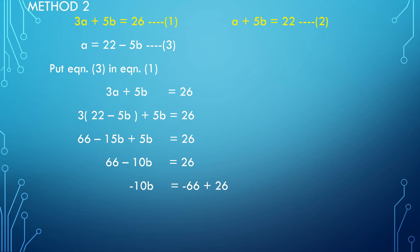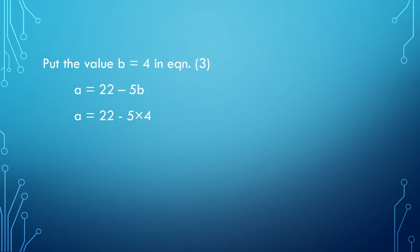Taking 66 to the right side, it becomes minus 66. So minus 10B equals 26 minus 66, which is minus 40. The minus signs cancel, giving B equals 40 divided by 10, hence B equals 4. Now put the value of B equal to 4 in equation number 3: A equals 22 minus 5 times 4, equals 22 minus 20, so A equals 2. Hence the solution is A equals 2 and B equals 4.